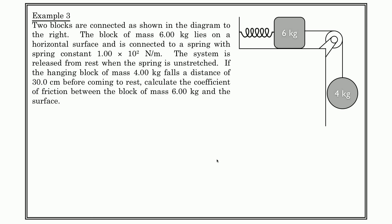This question right here has a block and a mass, two blocks, I guess you could call them. One of them is six kilograms, one of them is four kilograms. The block with a mass of six kilograms, which is up here, is on a horizontal surface, and it's connected to this spring. The spring has a constant of 1.00 times 10 to the 2 newtons per meter.